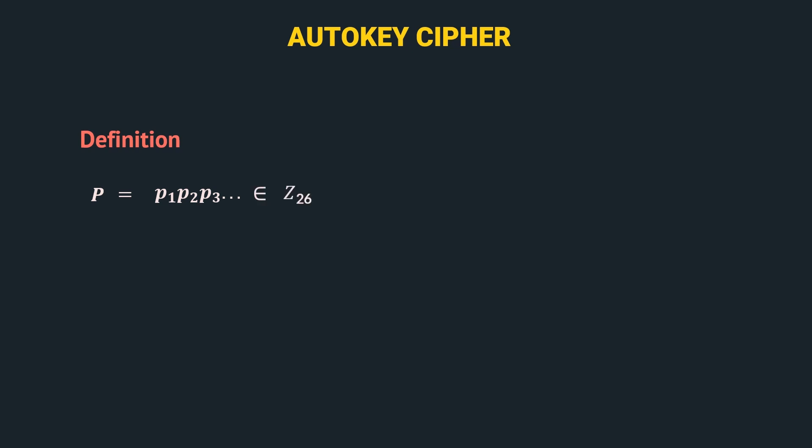Similar to the plain text, we represent ciphertext as a stream of characters represented by c1, c2, c3, and so on, where ci is the ith character of the ciphertext. Here also, the domain of ciphertext is Z26.